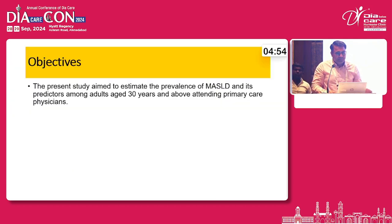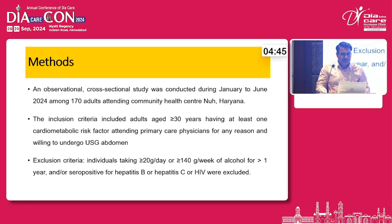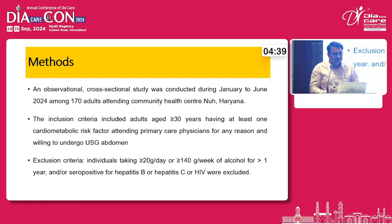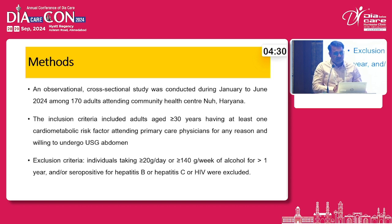The study objective was to estimate the prevalence of MASLD and its predictors among adults aged 30 years and above attending primary care physicians. The observational cross-sectional study was conducted from January to June 2024, comprising 170 adults. Inclusion criteria included adults over 30 years having at least one cardiometabolic risk factor and willing to undergo USG abdomen.